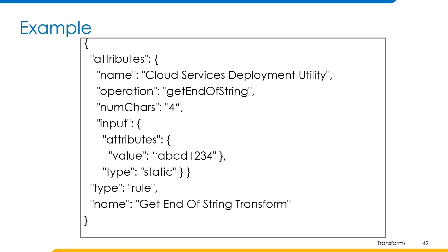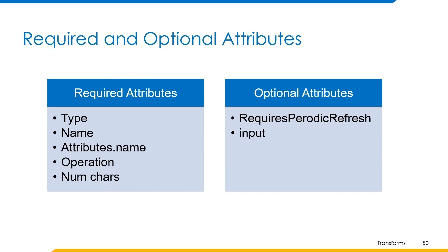The required attributes are type, name, attribute name, operation, and number of characters. The optional attributes are requires periodic refresh and input. Now let's have a quick demo on how this transform works, and then we'll move to the next transform which is get reference identity attribute transform.